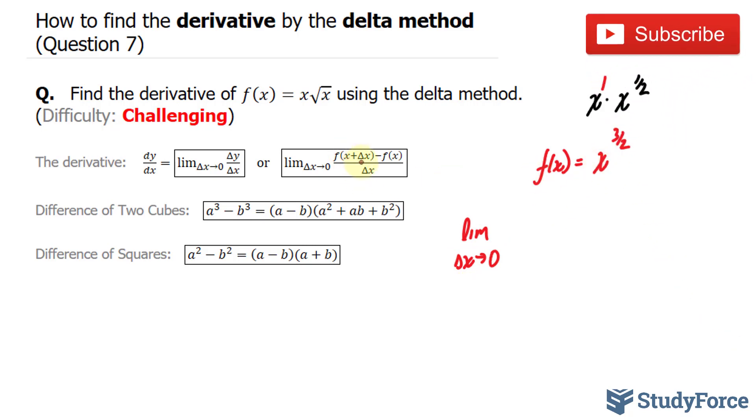And I'll replace x plus delta x into here, raised to the power of three over two, minus the function itself, divided by delta x.